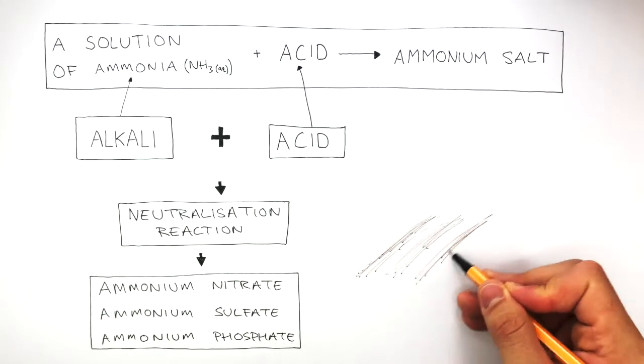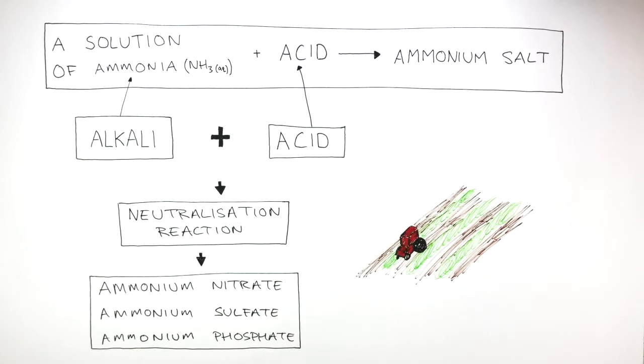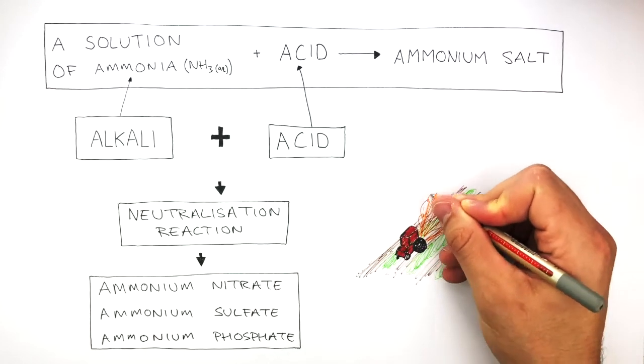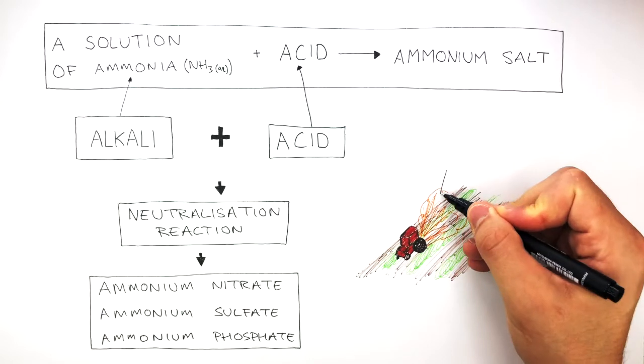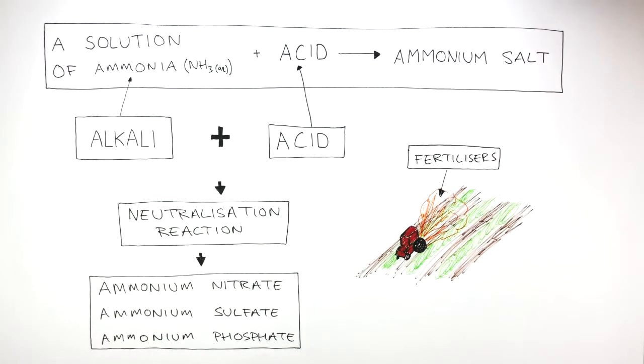This diagram represents the soil and crops grown in a field, and this tractor is responsible for spraying the fertilizers on the field. These fertilizers are the ammonium salts, ammonium nitrate, ammonium sulfate, and ammonium phosphate. They're sprayed on the field to help the crops grow.